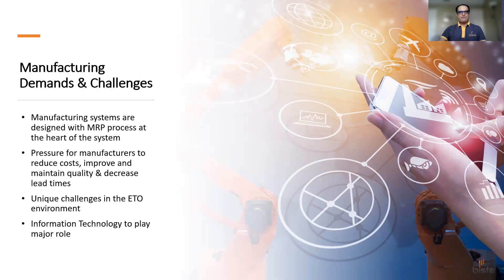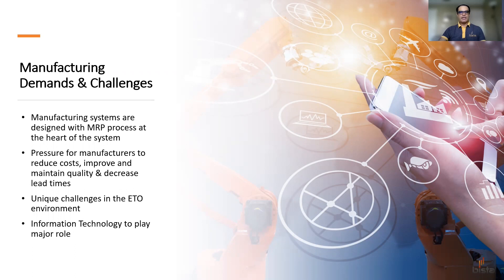Manufacturing systems are typically focused towards MRP at the center. The emphasis of such systems is on standard bill-of-materials, routings, and standard costs. In today's challenging business environment, manufacturers face increased pressure from competition to reduce costs, improve and maintain quality, and decrease lead times. Designers and manufacturers of projects face more unique challenges due to the complexity of the products they build and the peculiar requirements of this project-based engineer-to-order environment. That's why today companies look to information technology to help improve their processes and gain a competitive advantage.